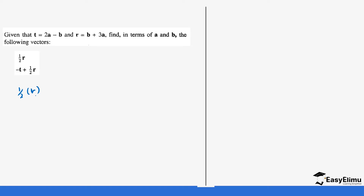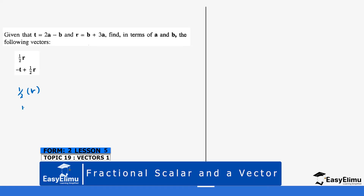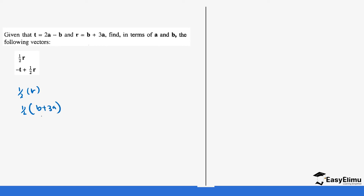So ½r means one half into bracket r, which is b plus 3a. This becomes ½b plus 3/2a.